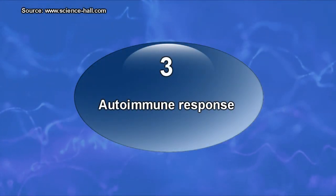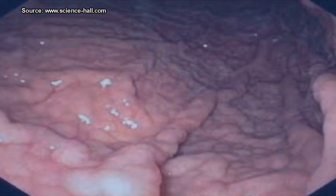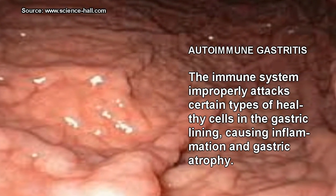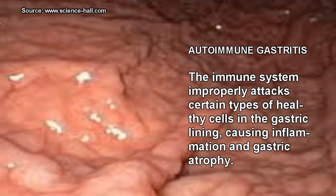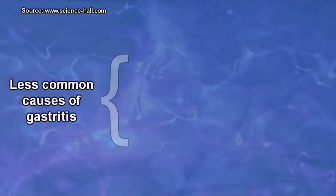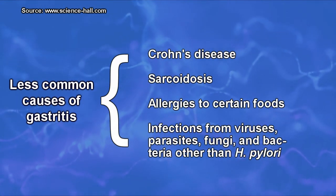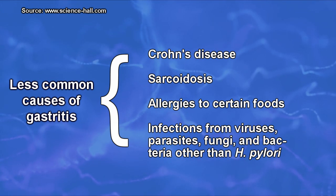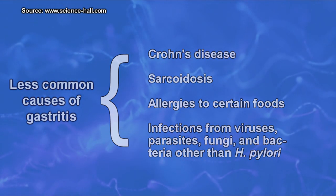Autoimmune gastritis is chronic and typically non-erosive. Here, the immune system improperly attacks certain types of healthy cells in the gastric lining, causing inflammation and gastric atrophy. Other less common causes of gastritis include Crohn's disease, sarcoidosis, allergies to certain foods, and infections from viruses, parasites, fungi, and bacteria other than Helicobacter pylori.